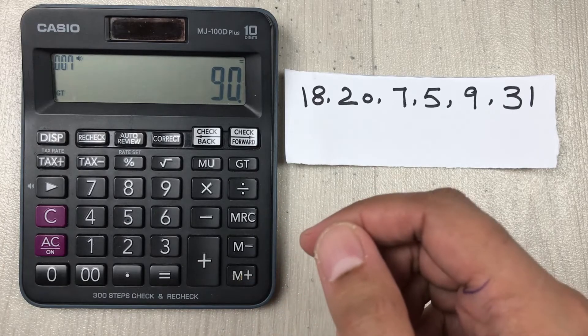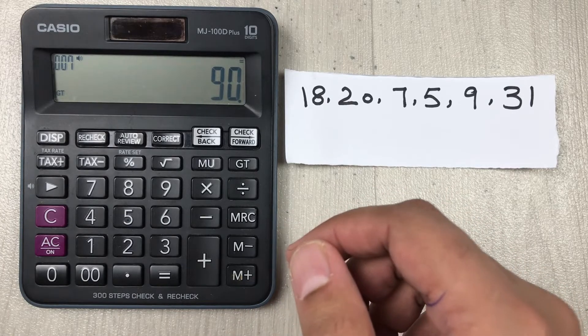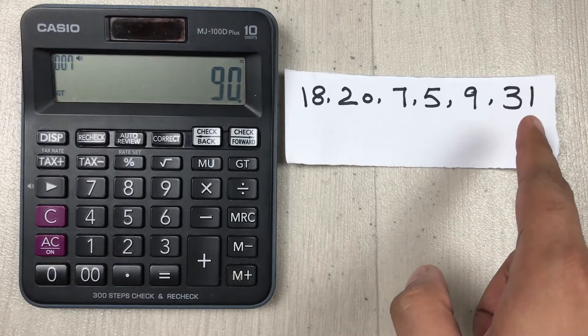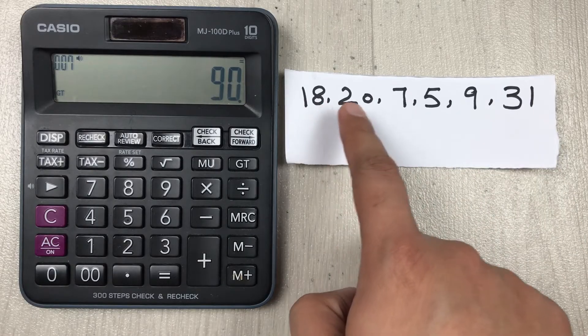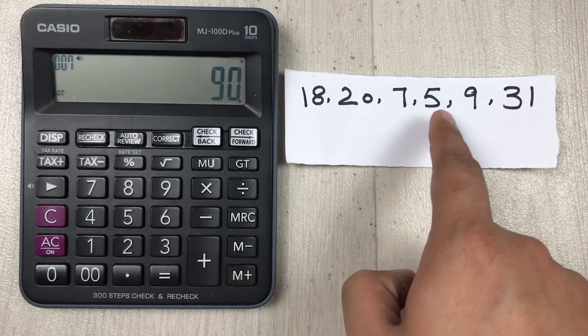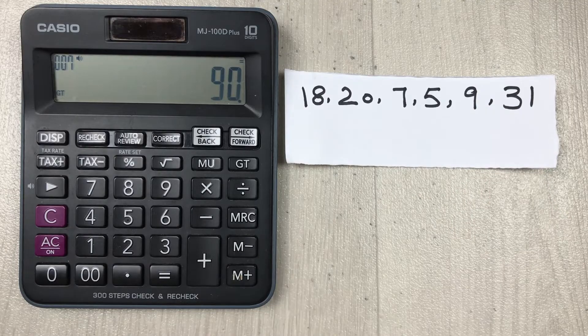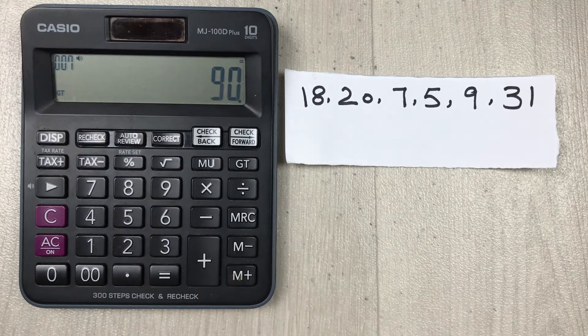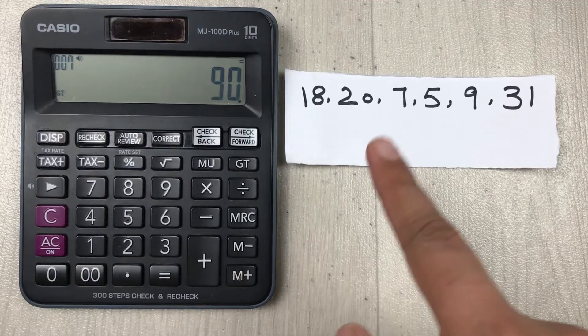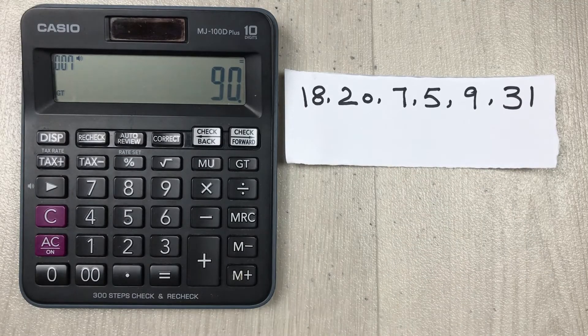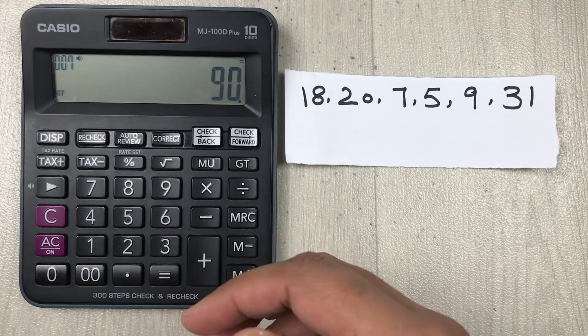In the second step, we start counting these numbers: 1, 2, 3, 4, 5, 6. So in total there are 6 numbers. In the last step, we divide.